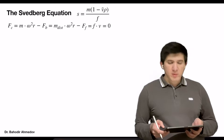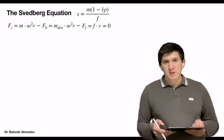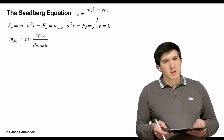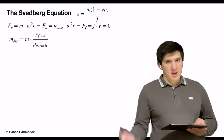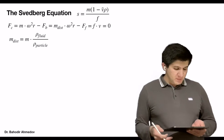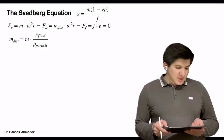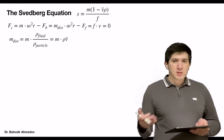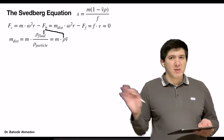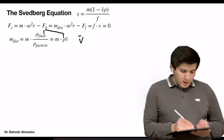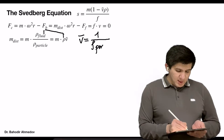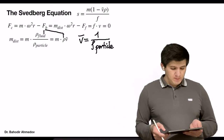Putting all of these terms together, we get roughly this equation. Now, I need to write down what the displaced mass means. The weight of the fluid displaced by a particle with mass m can be calculated by multiplying the mass of the particle times the ratio of the density of the fluid to the density of the particle. I am going to rewrite this equation by multiplying m by rho times v-bar, where v-bar is called the specific volume. It can be simply calculated by dividing one by the density of the particle — it is simply the reciprocal of the density of the particle.